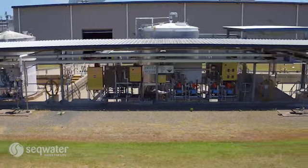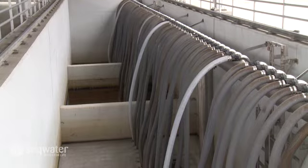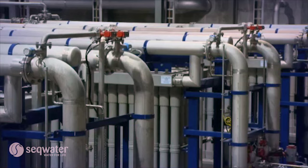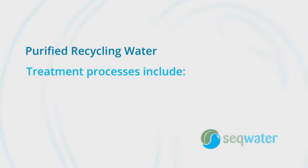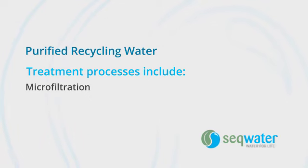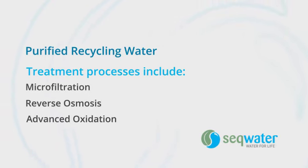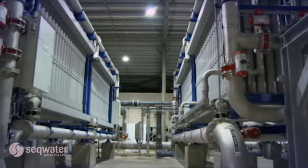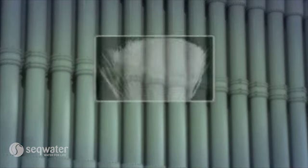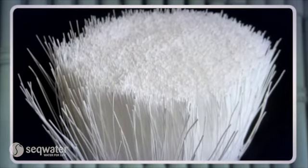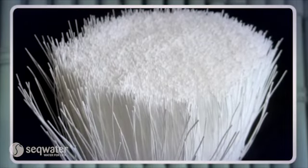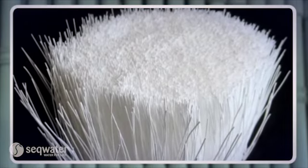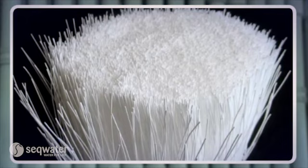The wastewater undergoes multiple processes to purify it. The key ones to be aware of are microfiltration, reverse osmosis and advanced oxidation. To explain, microfiltration involves passing the pre-treated wastewater through fine membrane filters that remove particles and microorganisms, including bacteria and some viruses.